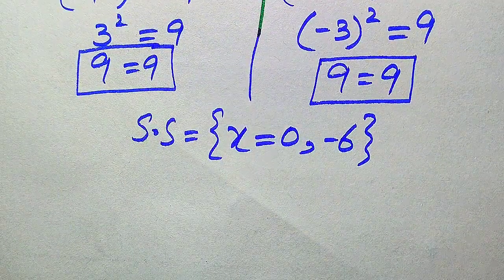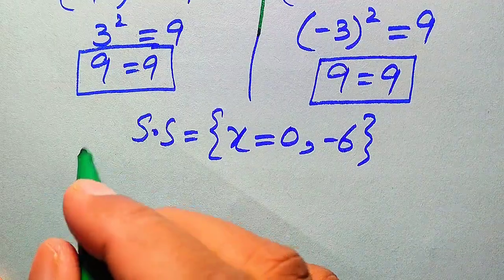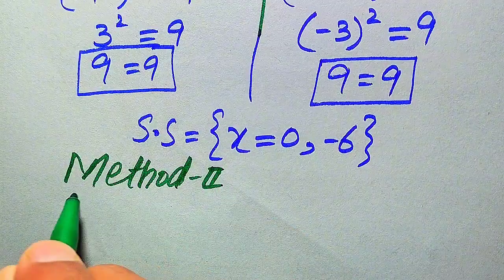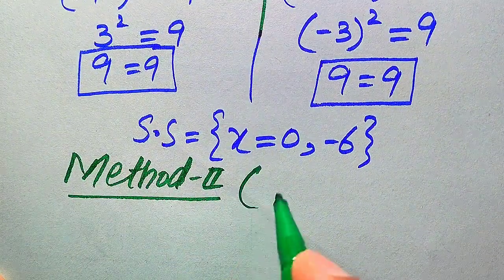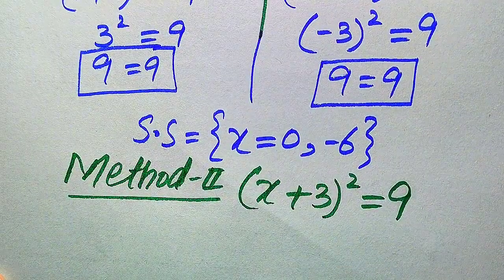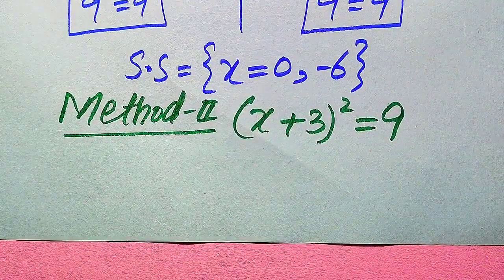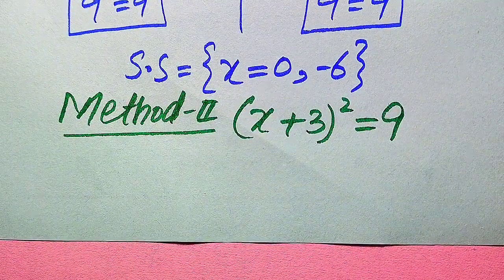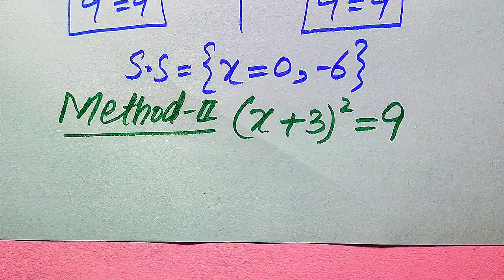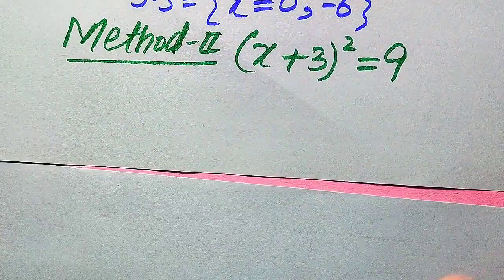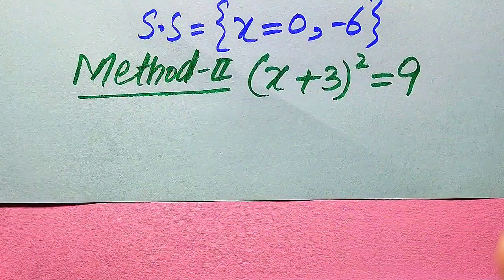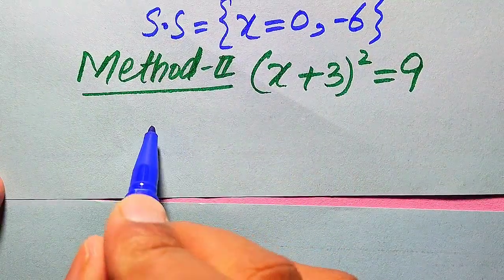Now we move towards our second method. In the second method, we copy down the given equation: (x + 3)² = 9. In the second method we find the roots with the help of the square root by taking the square root on both sides.